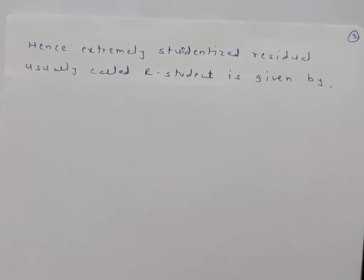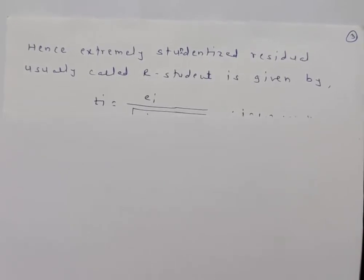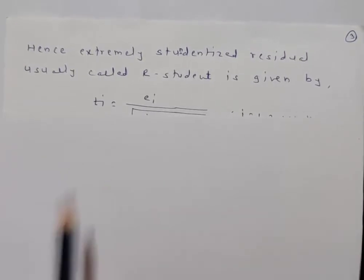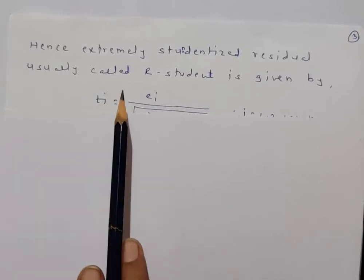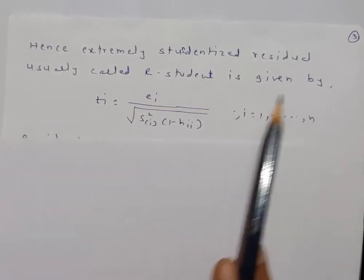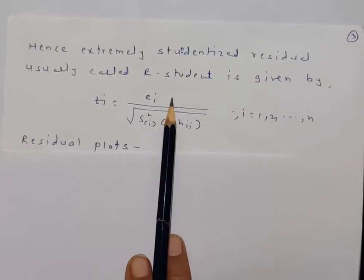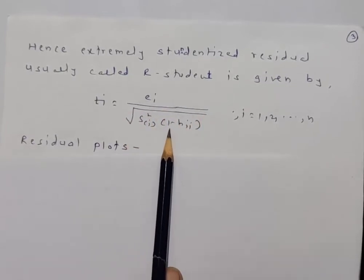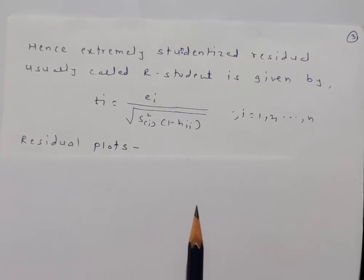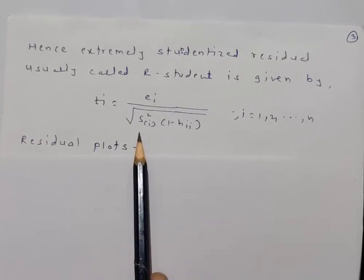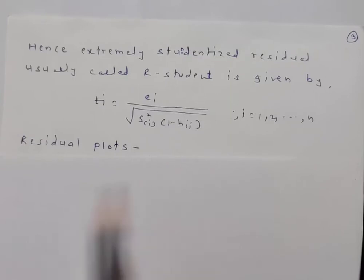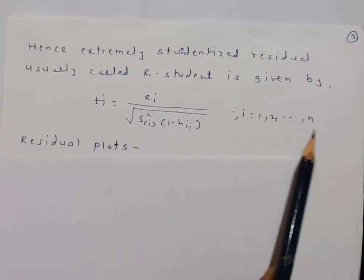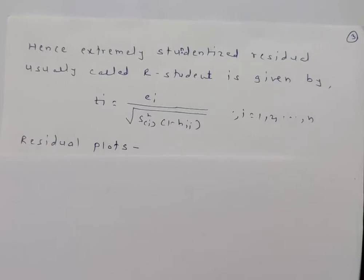The externally studentized residual, usually called R-student, is given by: T_i = e_i / √(S²_(i) · (1 − h_ii)), for i = 1 to n. Here we replace σ² with S²_(i), the leave-one-out estimate of sigma squared. This is used for detecting outliers.